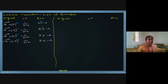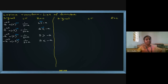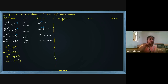Now I will write another set of signals. If I have e^(+at), the first one is e^(+at) u(t), then e^(+at) u(-t), and minus e^(+at) u(-t). These are the four signals.